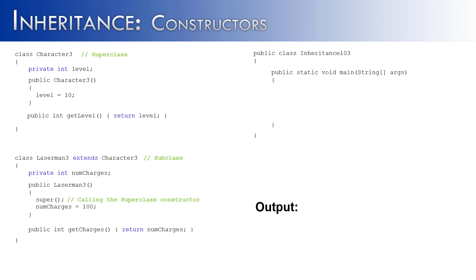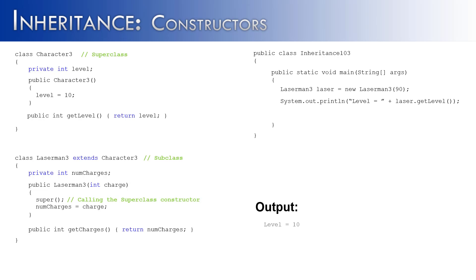Now let's say that we wanted to change up our Laserman class a little bit by adding 90 to the constructor. What 90 is going to be is the number of charges Laserman can shoot. So instead of hardcoding 100, we want the user to be able to define how many lasers a Laserman can shoot inside the constructor. We're going to take in the value being sent over, and then instead of setting numCharges to 100, we're going to set it to the value of our formal parameter. So when we say level equals laser.getLevel(), level cannot be changed in the superclass, so this outputs 10. But when we say charges equals laser.getCharges(), it's going to say charges equals 90, giving more flexibility for the client program to change the value of charges.